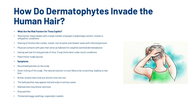Risk factors for tinea capitis include: sharing hair or shave blades with large numbers of people in pilgrimage centres, mostly in unhygienic conditions; sharing fomites like combs, towels, hairbrushes, and theatre seats with infected people; physical contact with pets that serve as habitats for zoophilic dermatophytes; having wet hair for long periods, as fungi thrive best under moist conditions; and minor scalp injuries.